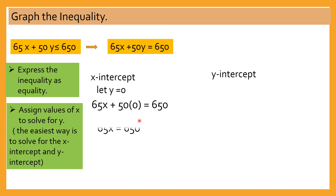This equals 0, so what we have is 65x equals 650. Then we're going to solve for x by dividing both sides by 65. 65 divided by 65 is 1, and 650 divided by 65 is 10. Which means that if y is 0, x is 10 — so that's the ordered pair (10, 0).